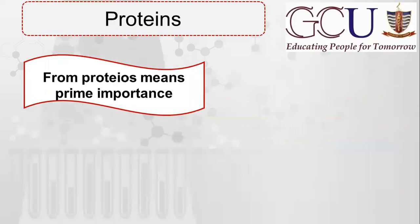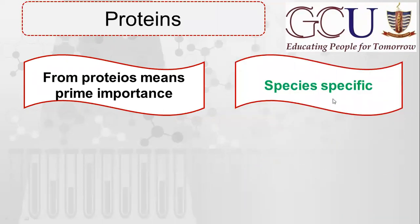The word 'protein' is derived from 'proteose', which means prime importance. Proteose means first importance — those things which have very high importance are called proteins. Proteins are specific in nature, and they are species-specific, meaning proteins differ in every organism.